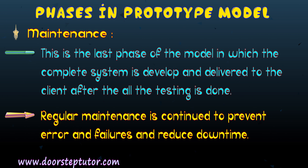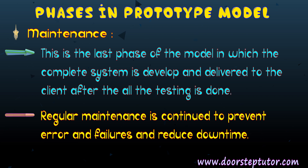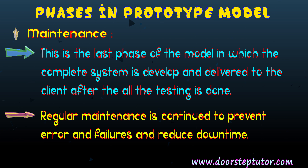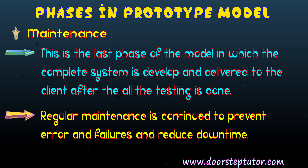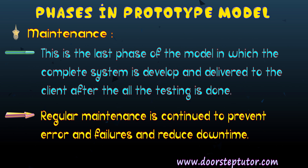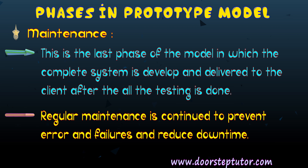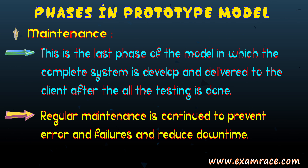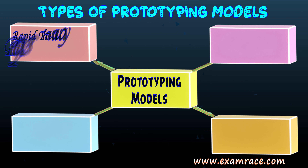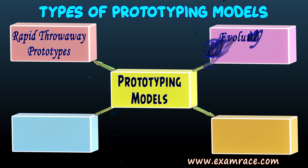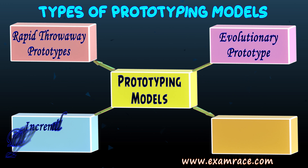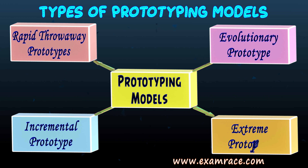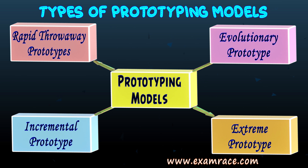We must also ensure reduced downtime. Downtime refers to the duration when a system fails to perform its primary functions. There are different types of prototyping models: rapid throwaway prototype, evolutionary prototype, incremental prototype, and extreme prototype. Let's discuss each one by one.